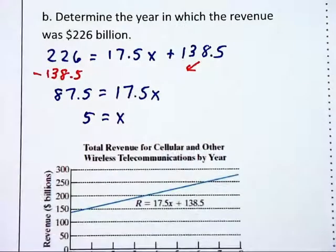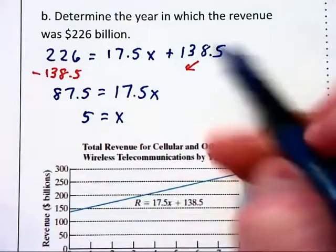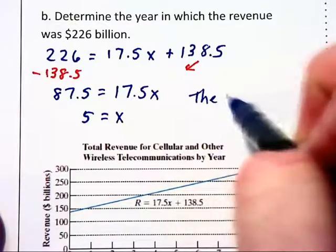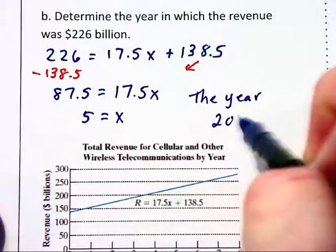That means the revenue will be 226 billion five years after 2005, which will mean that the answer is the year 2010.